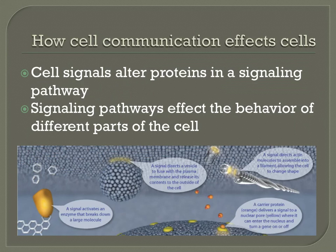Depending on the signaling molecules involved, the cell can respond in a variety of ways, as shown in the picture below. Sometimes a large molecule might be broken down. The cell might signal the release of the contents of some vesicle to the outside of the cell. The cell's shape might change, or a gene could be turned on or off. The possibilities are really countless.